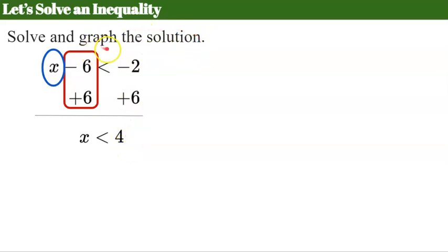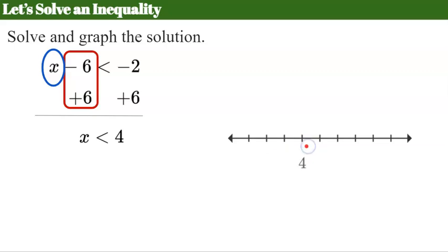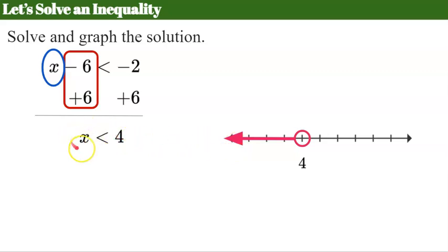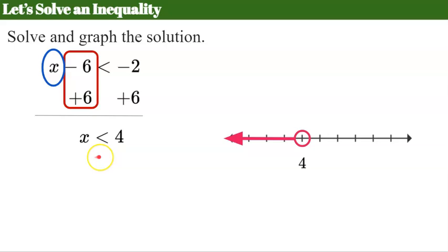Now we graph the solution. I create my number line and place the number 4 on it. We use an open circle because it's less than but not equal to — open means not equal to. Because the variable is on the left, the arrowhead matches the less than symbol and goes to the left. All values for x must be less than 4. The graph represents our entire solution set because there are infinitely many solutions, and x less than 4 is our equivalent inequality representing the solution set.